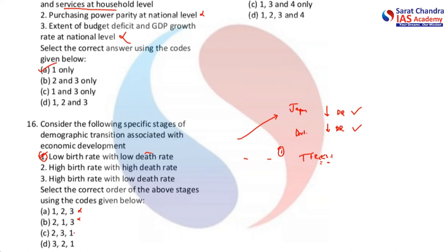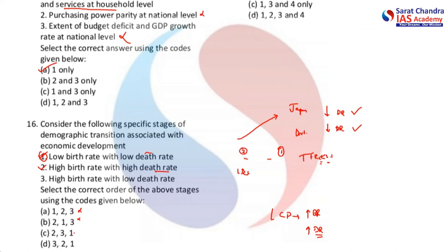Looking at option two: high birth rate with high death rate — if birth rate is very high and death rate is also very high, this is because there is no proper access to medicines and healthcare. This is what happens in least developed countries — take the case of African economies where there is no proper family planning and the birth rate is very high, and due to lack of affordable medicines, the death rate is also very high. So high birth rate and high death rate pertains to LDCs.